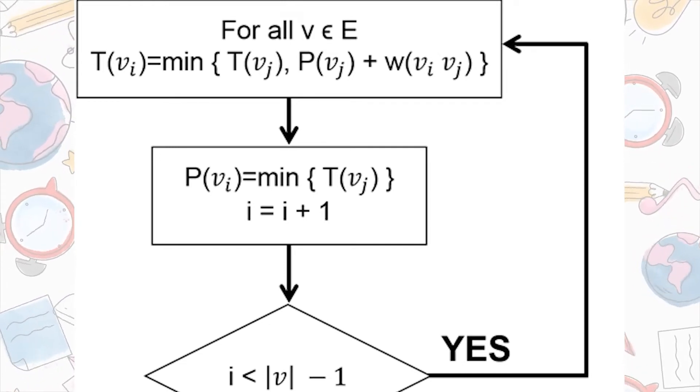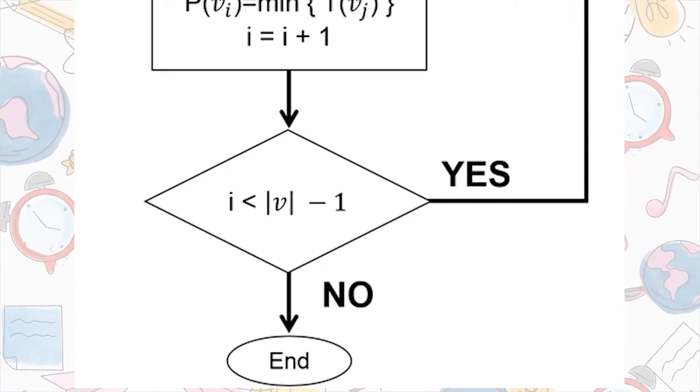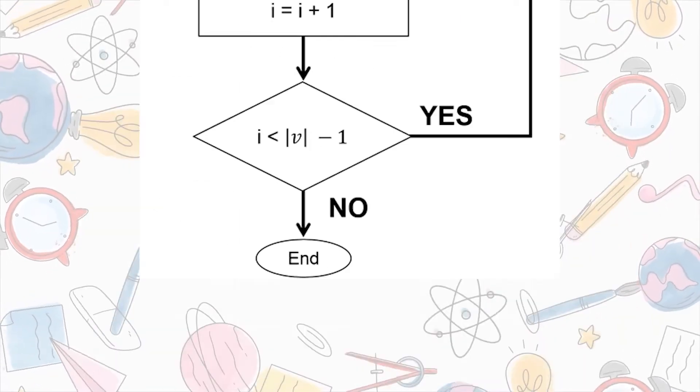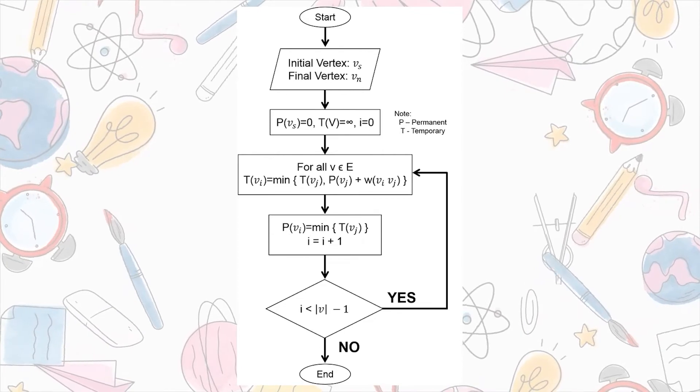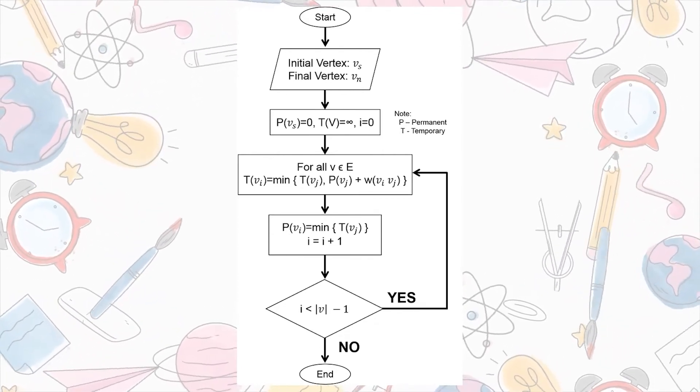After executing the formula, we will establish the permanent label of V sub I as the minimum value of the temporary value of J. Then, we will add 1 to I. If I is less than the absolute value of V minus 1, then the algorithm is now done, and we could now trace the shortest path. However, if it is still greater than the absolute value of V minus 1, then we will still repeat the steps until the condition is met.